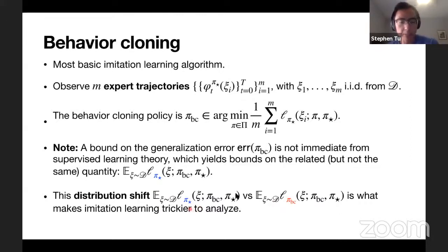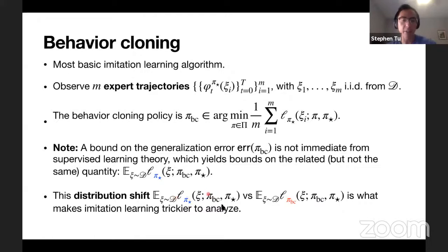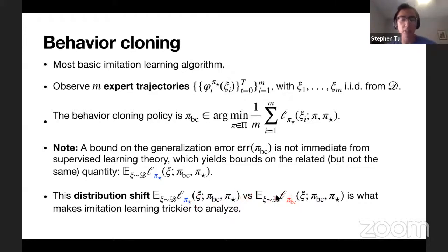This part of the talk develops tools to take the guarantee from statistical learning - the guarantee on the left - and use stability theory to port this guarantee over to the generalization error we actually care about. That's basically what we try to accomplish in the next two hours.